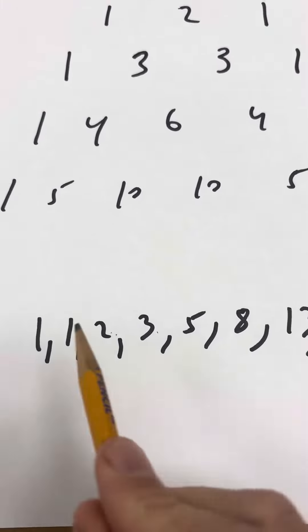Now what a lot of people don't know is the Fibonacci sequence is actually in Pascal's Triangle. Let me show you. Where's the 1? Right there. Where's the second 1? Right here. Where's the 2? Right here. 1 plus 1 is 2.